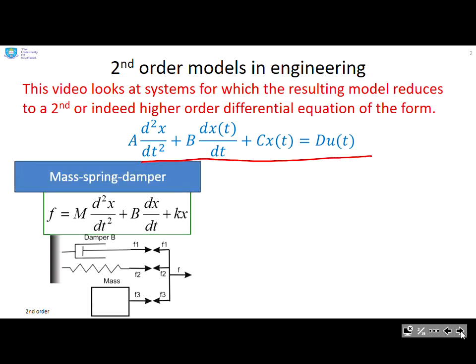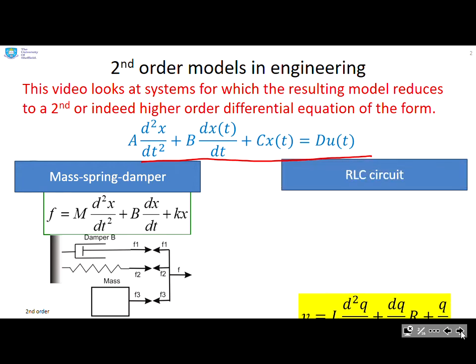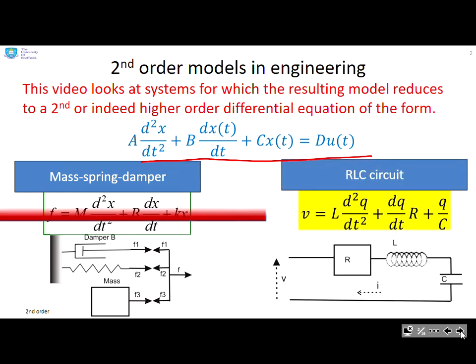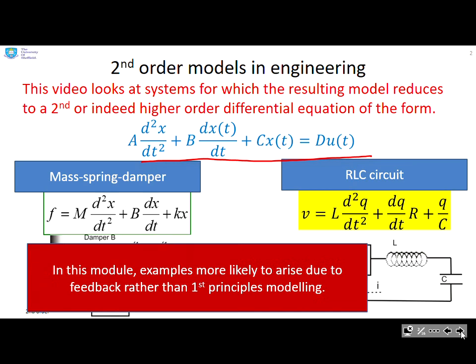Some examples might be a mass-spring damper or an RLC circuit. In fact, in this module, the second order models or examples you come across are more likely to arise due to feedback rather than first principles modelling.